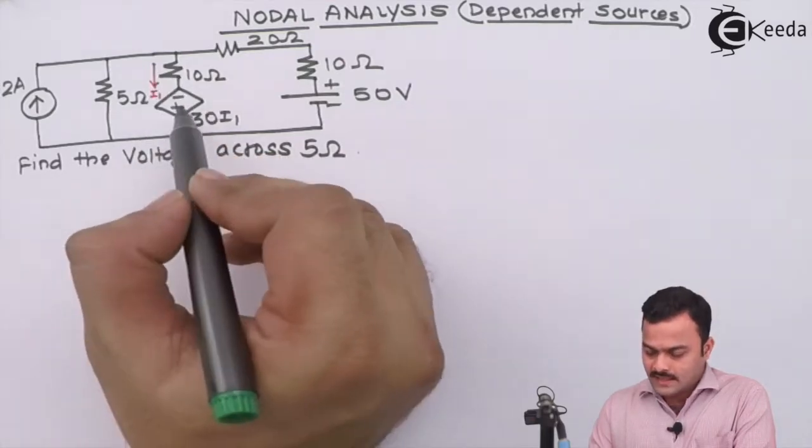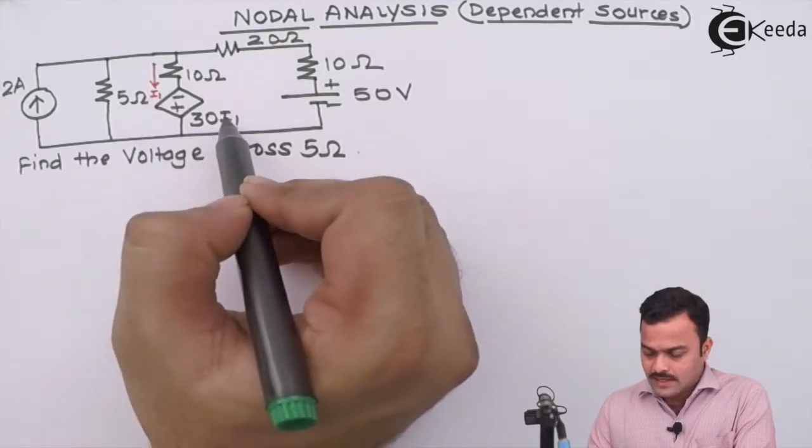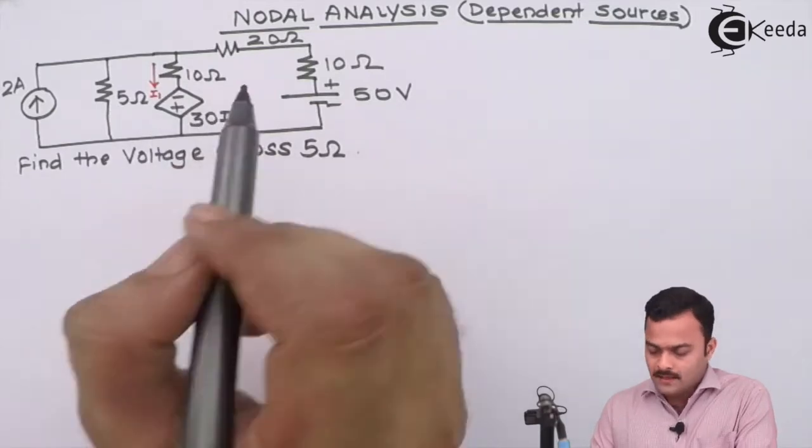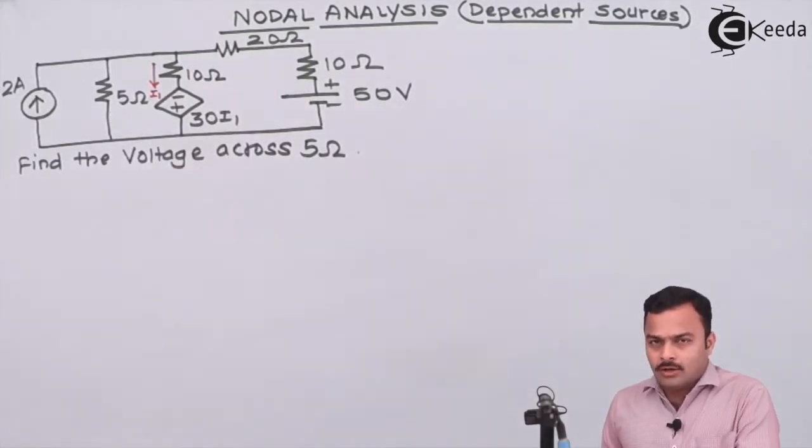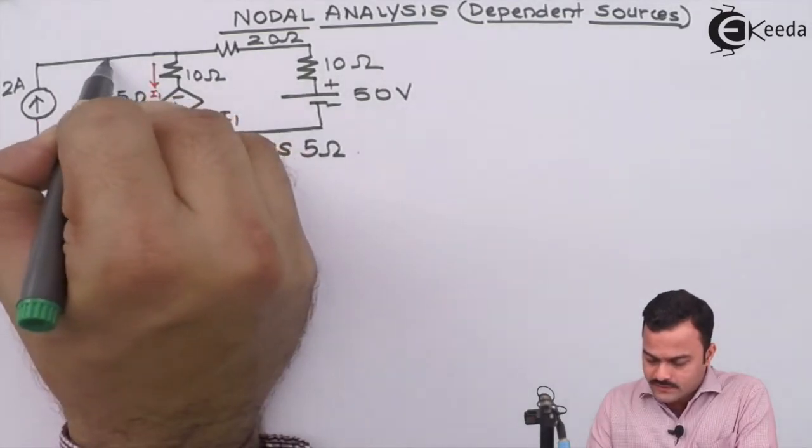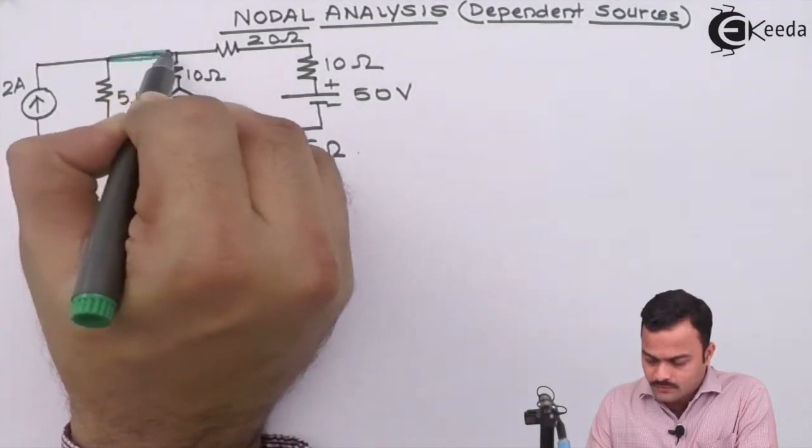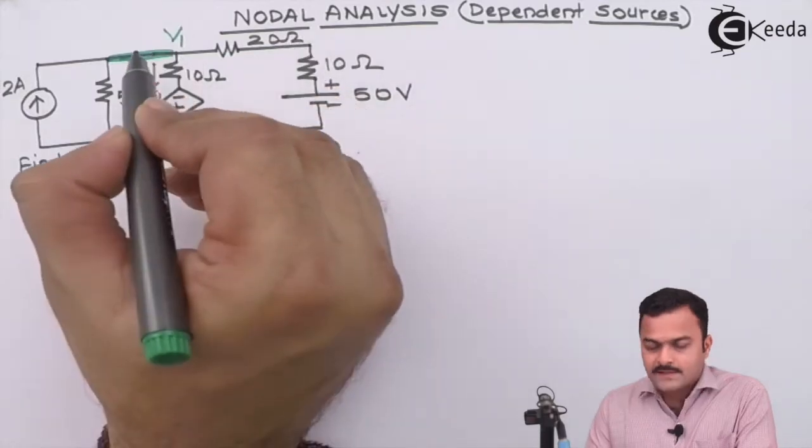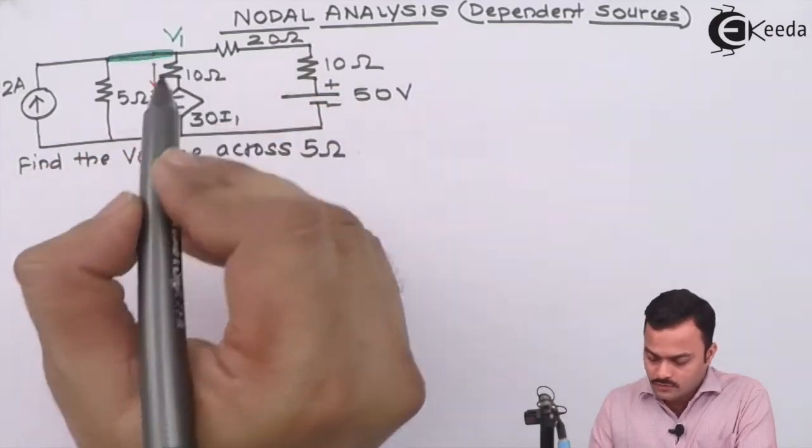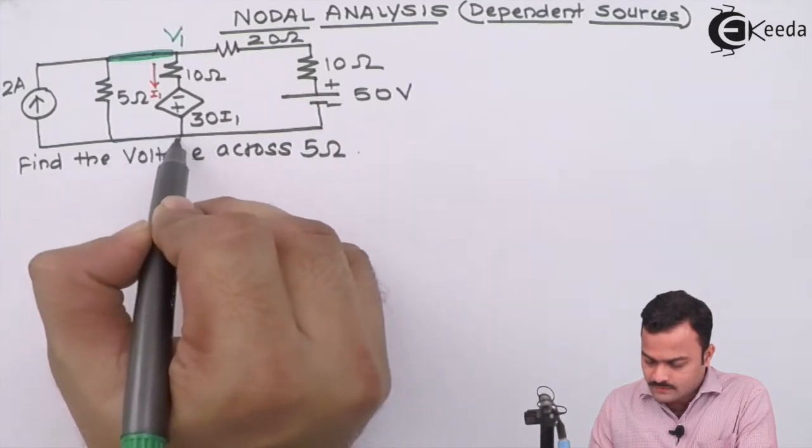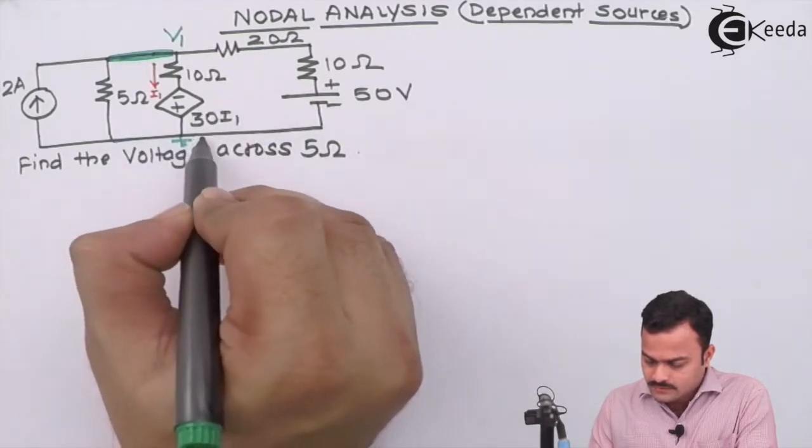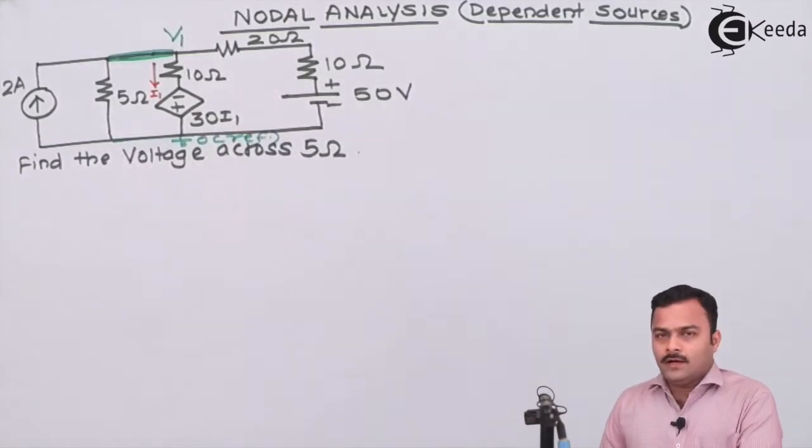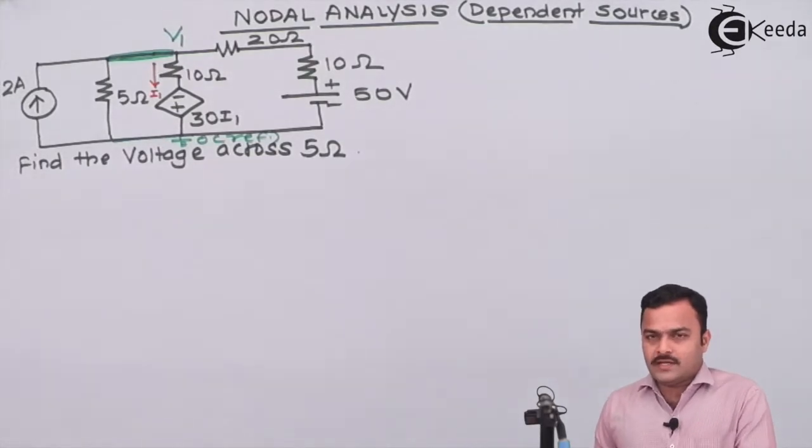I can say it is a current controlled voltage source. This I1 is current flowing through a node which will control this voltage 30 I1. Let's mark all nodes first. This entire thing will become one node with potential V1. As per our definition, the circuit will have only one node along with one reference, so this is zero or the reference potential.